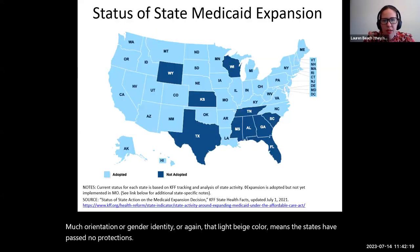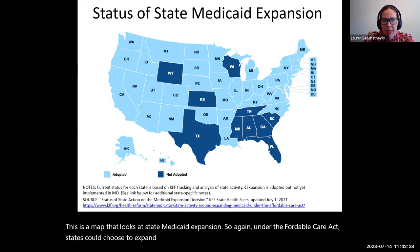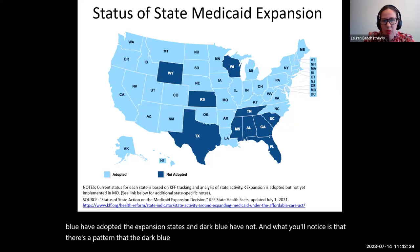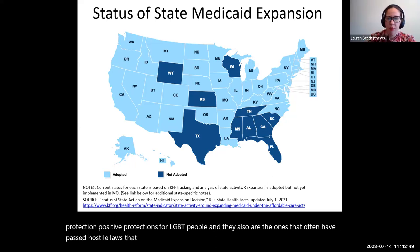This is a map that looks at state Medicaid expansion. Under the Affordable Care Act, states could choose to expand Medicaid or not. States in light blue have adopted the expansion; states in dark blue have not. What you'll notice is that the dark blue states here also tend to be the ones that have not passed positive protections for LGBTQI people, and they also are the ones that have often passed hostile laws attacking LGBTQI people in various ways.